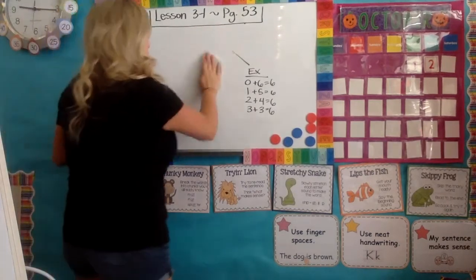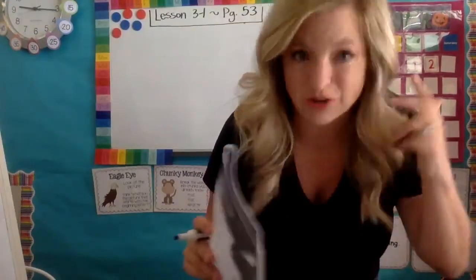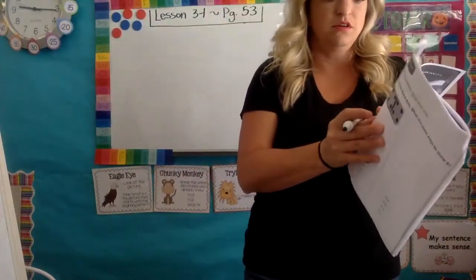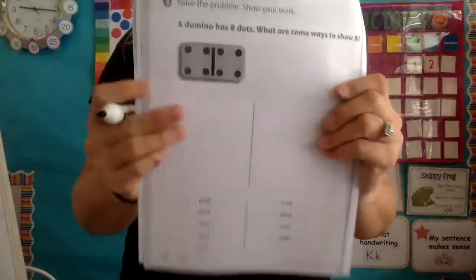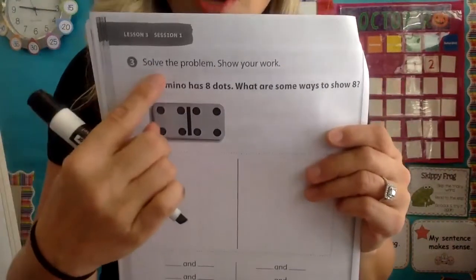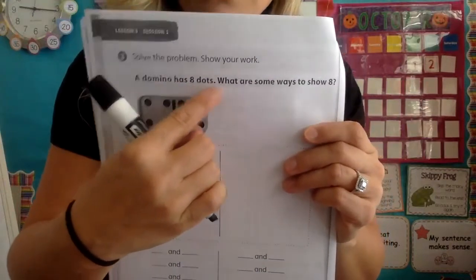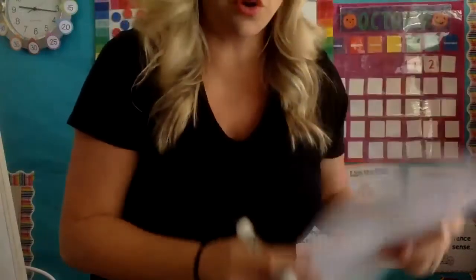Great job, friends! Let's continue learning about number bonds. Remember, another word for number bonds is 'partners' — it's a synonym. A synonym is two words that sound different but mean the same thing. Now I'm on page 56. It says: solve the problem, show your work — a domino has eight dots, what are some ways to show eight? You have a column and a column and an 'and.' Go ahead and start this, or pause if you need to.